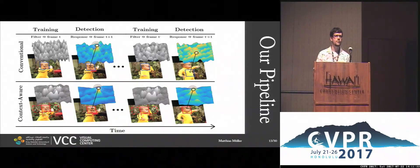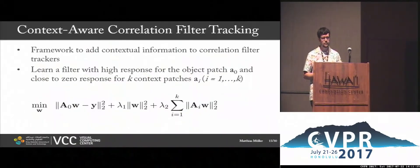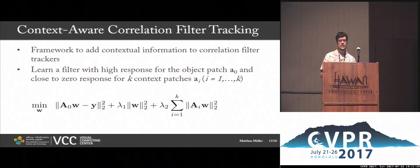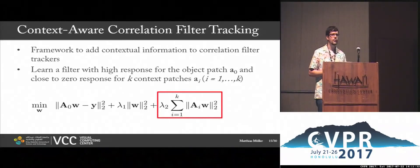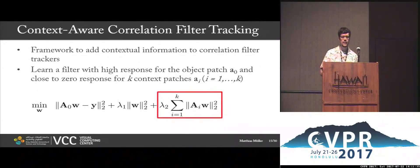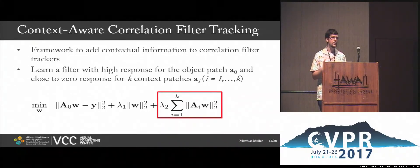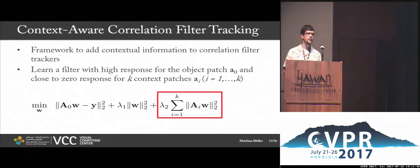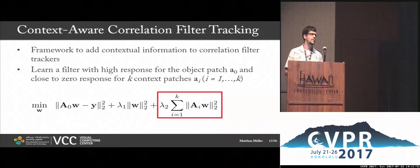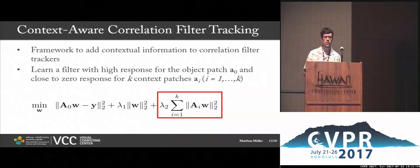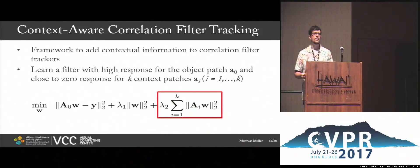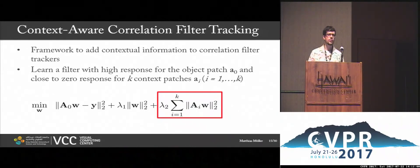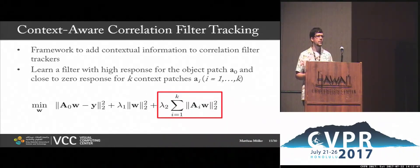So how do we do it? We add a context term to the standard formulation as a regularizer. It is a summation over the context patches we sampled, and the idea is that we approximately regress those context patches to zero because we want the filter to have a very low response there. It would make sense to use a hinge loss to rank the context patches, but the advantage of this formulation is that it's very computationally efficient.